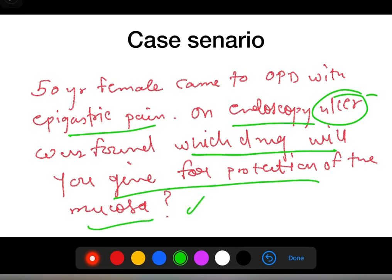Now there is already an ulcer, so we need to protect that ulcer so that perforation won't occur, which I have already explained. What we will give is sucralfate. This will protect the mucosa and prevent perforation. So this is a very useful drug and these are all the important points which I have covered.